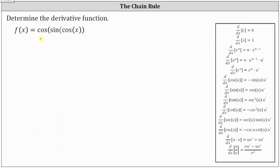The outermost function is this cosine function, and the inner function is a composite function, sine of cosine x. To find the derivative, we'll let u equal sine of cosine x. By letting u equal sine of cosine x, we can think of the original function as just cosine u, and differentiate cosine u with respect to x.